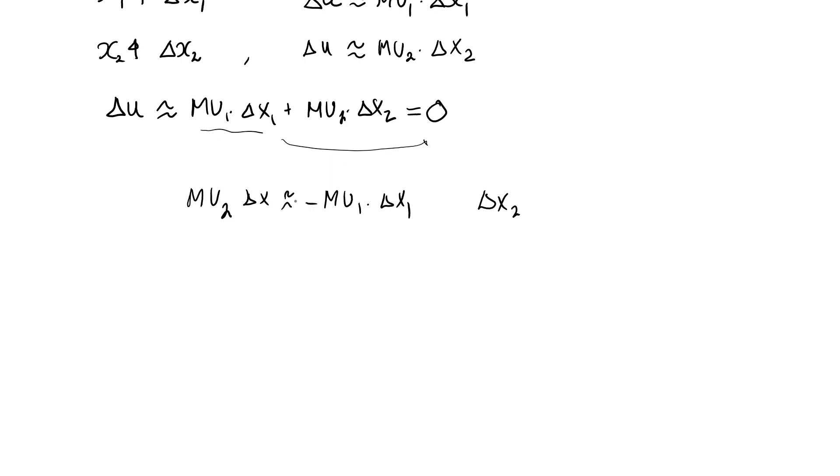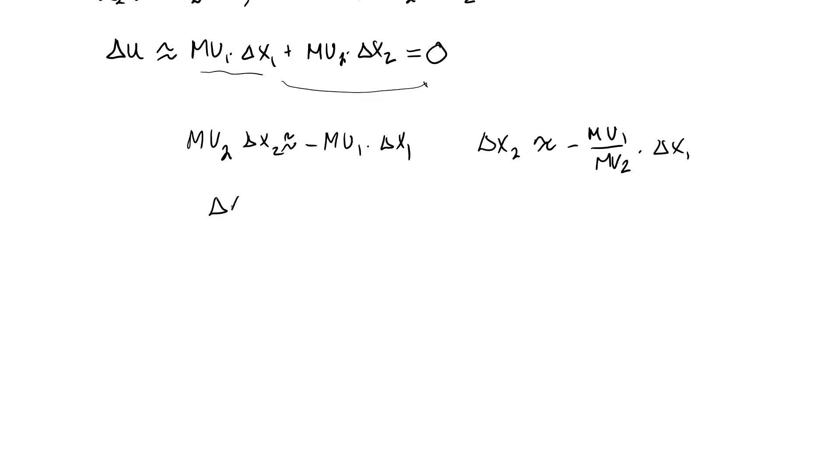We have delta x2. Well, this should be approximately equal to minus mu1 over mu2 times delta x1. Divide both sides by delta x1, and we have delta x2 over delta x1 is approximately equal to minus mu1 over mu2.